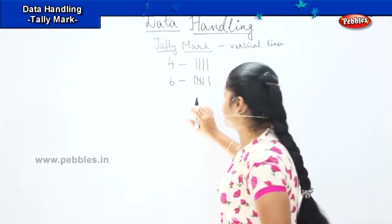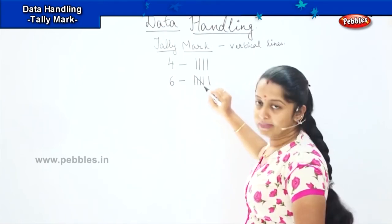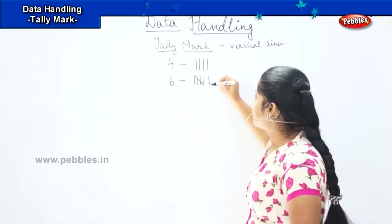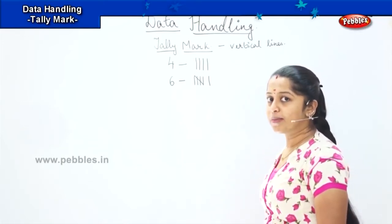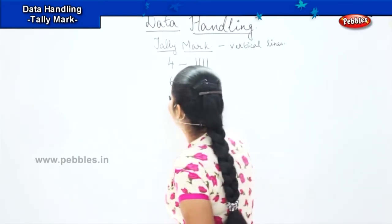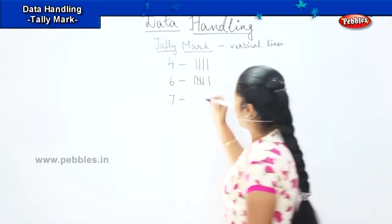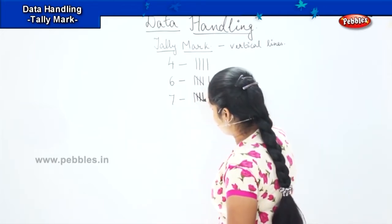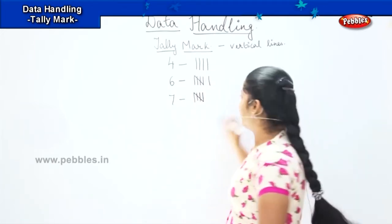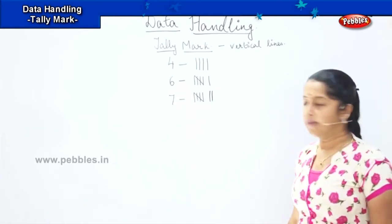Always my 5th line will be a slanting line and the remaining lines will be vertical. So here when I say 6, I will be drawing 1, 2, 3, 4, then the 5th will be my slanting line, and 6 will be my vertical line again. Shall we do some more? Say if I want to do 7, how will I draw? 1, 2, 3, 4, then slanting line 5, 6, 7.